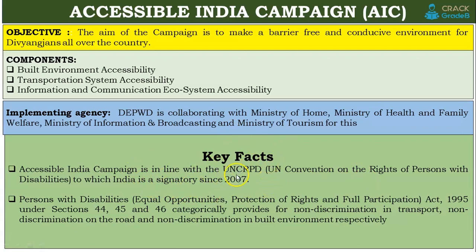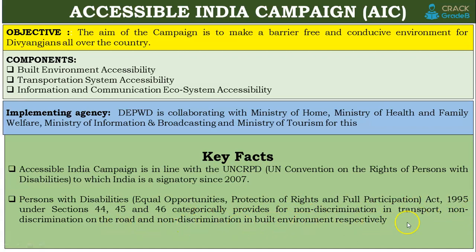As key facts, the government is a signatory to the UN CRPD — that is, the United Nations Convention on the Rights of Persons with Disabilities — which India signed in 2007. Due to this commitment, the government introduced the Persons with Disabilities (Equal Opportunities, Protection of Rights and Full Participation) Act, 1995. Under this Act, Sections 44, 45, and 46 provide for non-discrimination in transport, on the road, and in the built environment respectively.